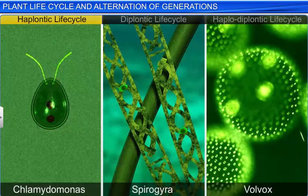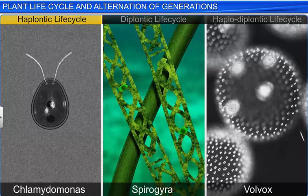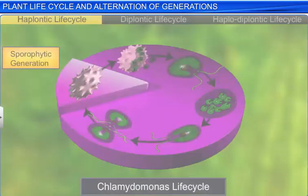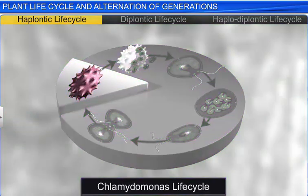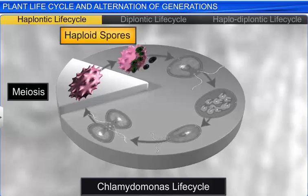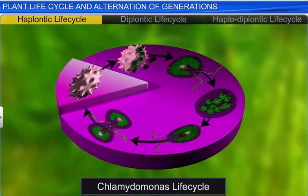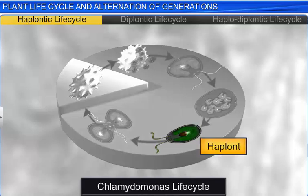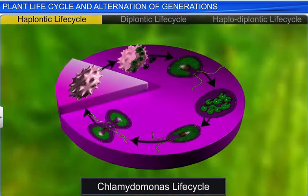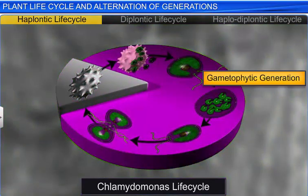In the haplontic life cycle, observed in algae such as Chlamydomonas, Spirogyra, and Volvox, the sporophytic generation is represented by a single-celled diploid zygote, and there are no free-living sporophytes. This zygote undergoes meiosis to form haploid spores, which divide mitotically to produce a free-living gametophyte. Since mitosis occurs only in the haploid phase, the resulting gametophytes are also called haplons, and the life cycle is called the haplontic life cycle, wherein the gametophytic generation is the dominant phase.